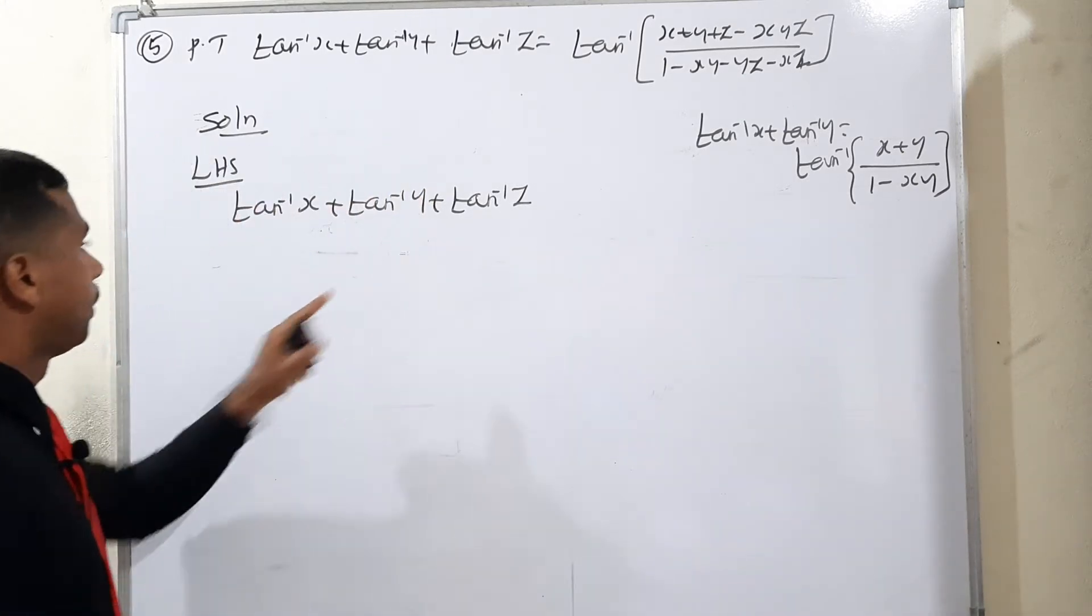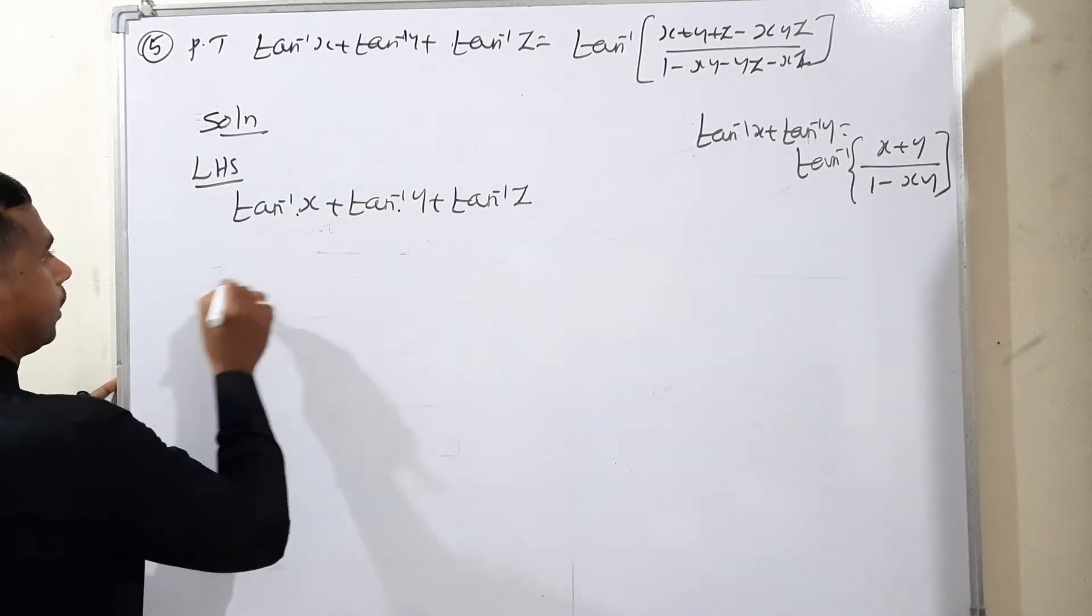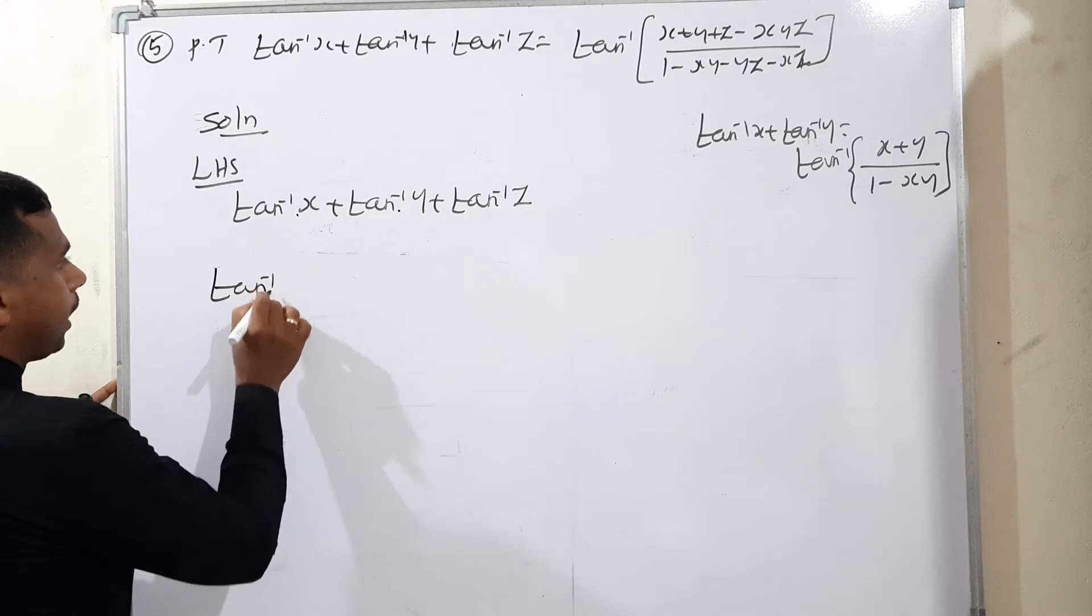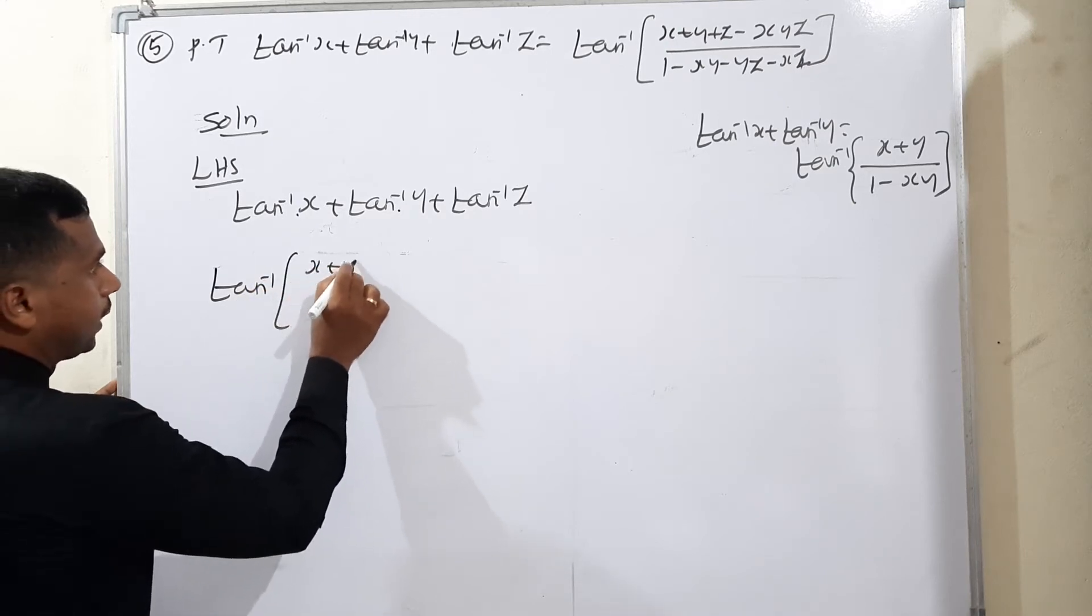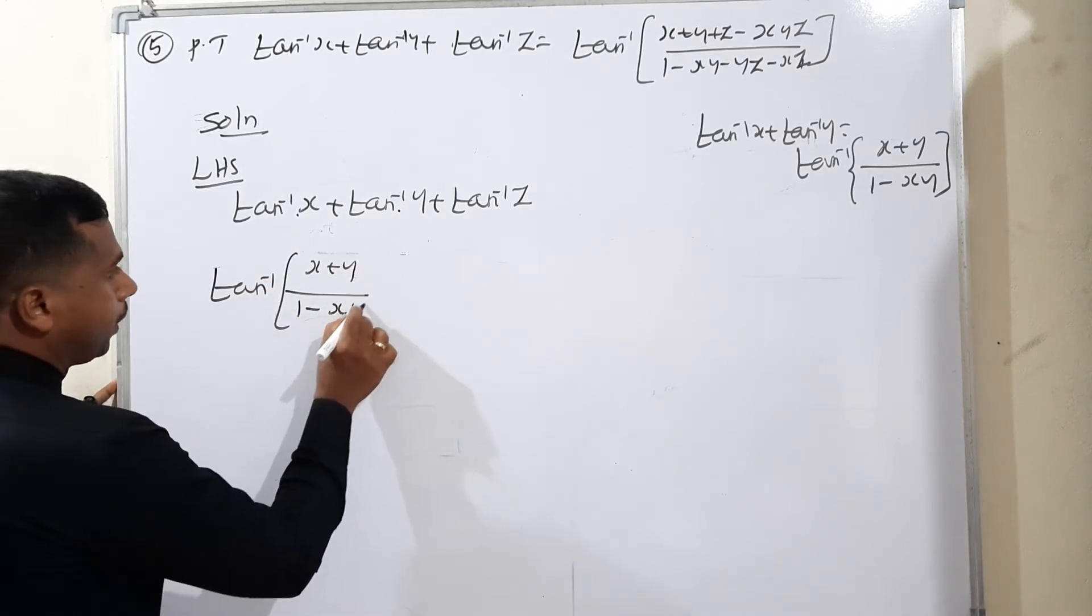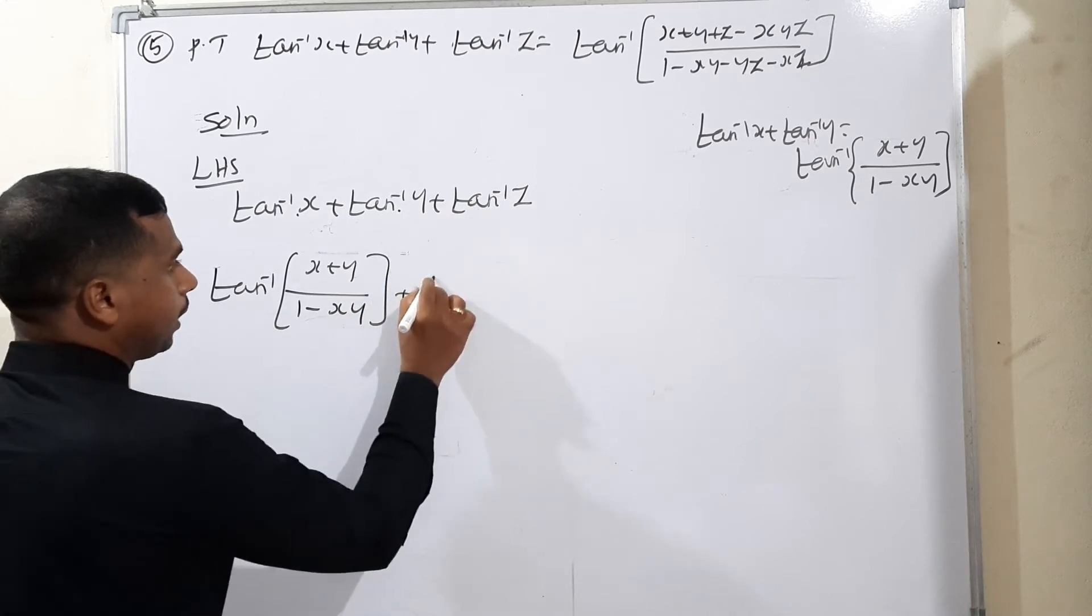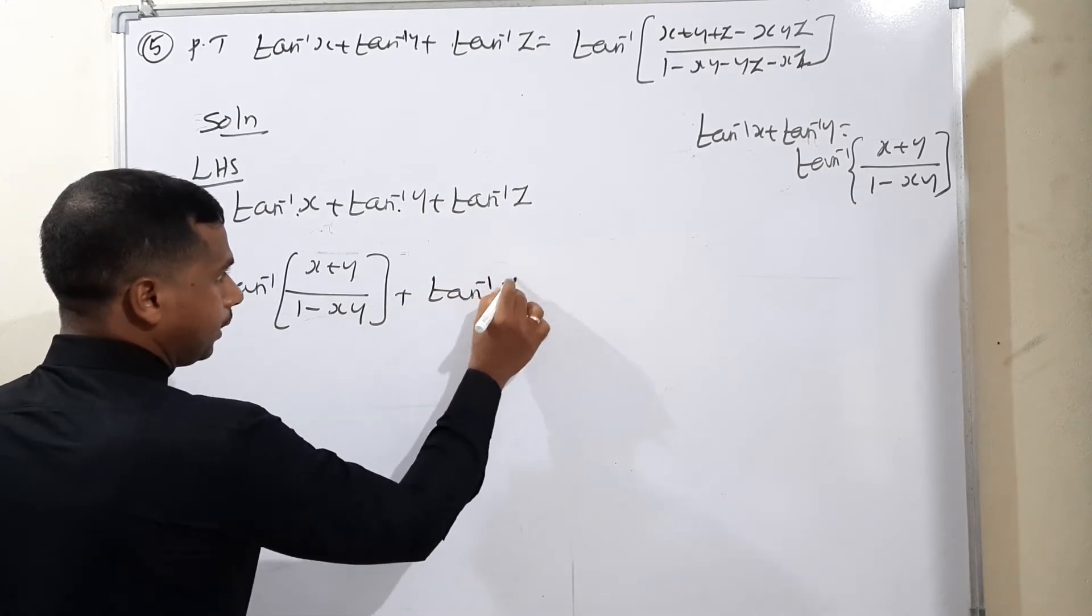In the first two terms, consider it to be x and y. Then tan inverse of x plus y divided by 1 minus xy, then third term as it is, tan inverse of z.